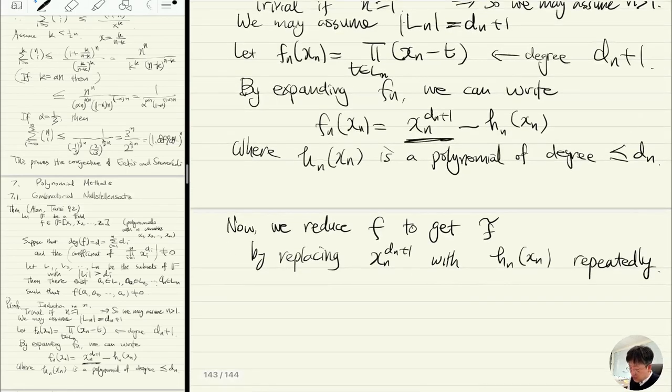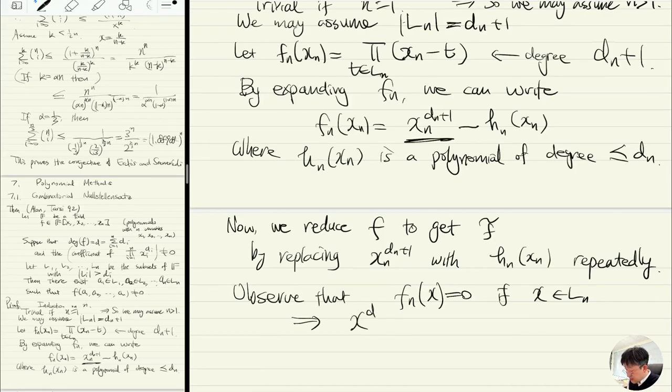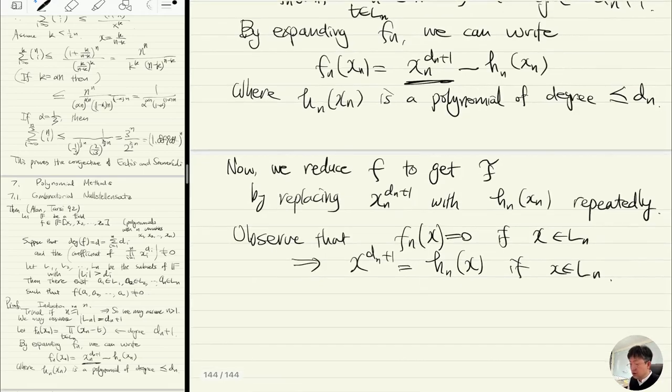Observe that fn(x) is 0 if x is in Ln, which means that xn to the dn+1 power equals hn(xn). Since we are interested in the solution where xn belongs to Ln, it doesn't matter even if we replace xn to the dn+1 with hn(xn). Once we apply this repeatedly, we get a lower order polynomial.